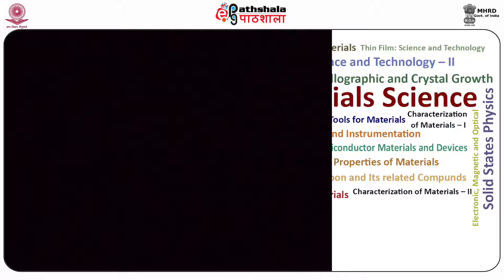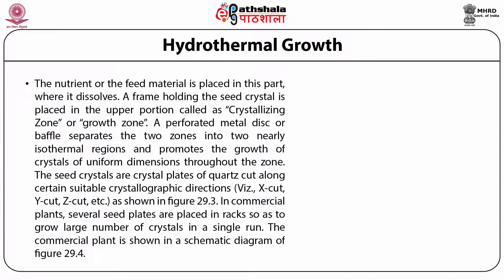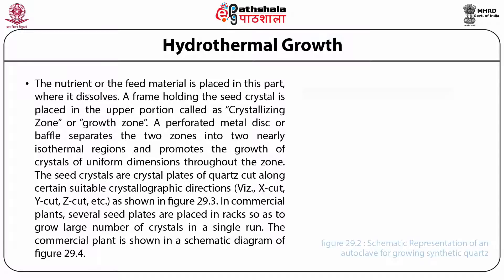The nutrient or feed material is placed in the lower part where it dissolves. A frame holding the seed crystal is placed in the upper portion called the crystallizing zone or growth zone. A perforated metal disc or baffle separates the two zones into two nearly isothermal regions and promotes the growth of crystals of uniform dimensions throughout the zone. The seed crystals are crystal plates of quartz cut along certain suitable crystallographic directions, namely the x-cut, y-cut, z-cut, etc., as shown in figure 29.3.